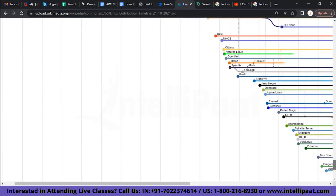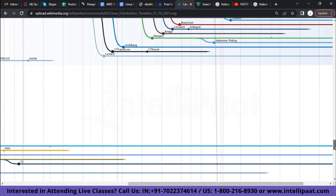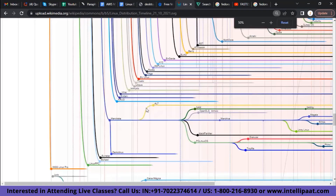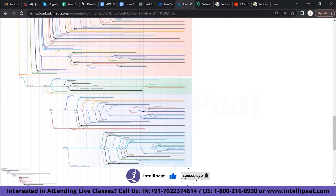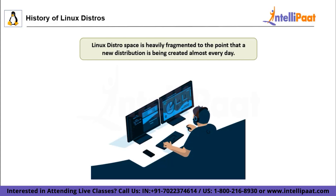Most of the early-days distros are no longer maintained and are just considered historical artifacts. As we are seeing in this graph, the Linux distros space is heavily fragmented to the point that a new distribution is being created almost every day. A very few of them are unique and bring something different to the table — most are just the same Ubuntu or Debian-based with a different theme or wrapper. Furthermore, the distro landscape is so dynamic that it changes every month, with some distributions becoming more stable while others become unstable in quality. Many Linux distributions are also discontinued every year due to lack of contributions, cost overruns, and other reasons.